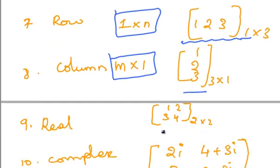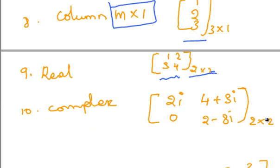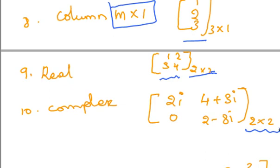Real matrix — a matrix in which all the elements are real numbers is known as a real matrix. For example, a 2 by 2 matrix with elements 1, 2, 3, 4. A complex matrix — a square matrix in which some or all of the elements are complex numbers. For example, a 2 by 2 matrix with elements 2i, 4i plus 3i, 0, and 2 minus 8i is a complex matrix.